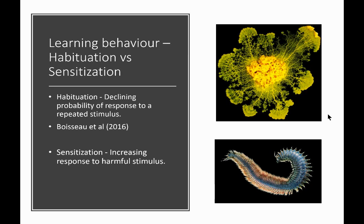Sensitization is effectively the opposite — an increasing response to either a harmful or beneficial stimulus. Aquatic worms were put in tubes and exposed to food at regular intervals. The more food was presented, the more the worms would respond to any change in their environment, such as a shadow, with increased feeding behavior. Sensitization can also be an increased response to a harmful stimulus — if a worm was shocked every time there was a shadow, they become increasingly sensitive to any change, producing a bigger response.